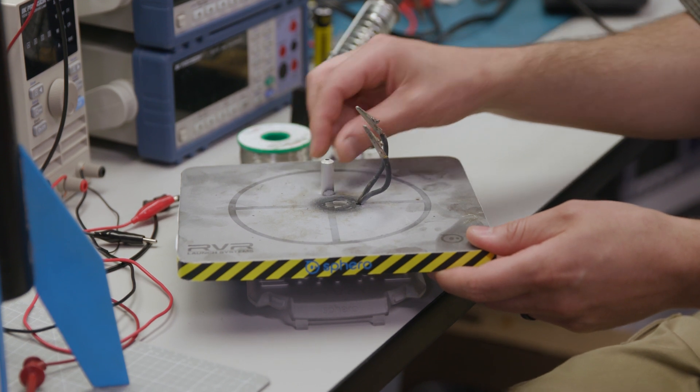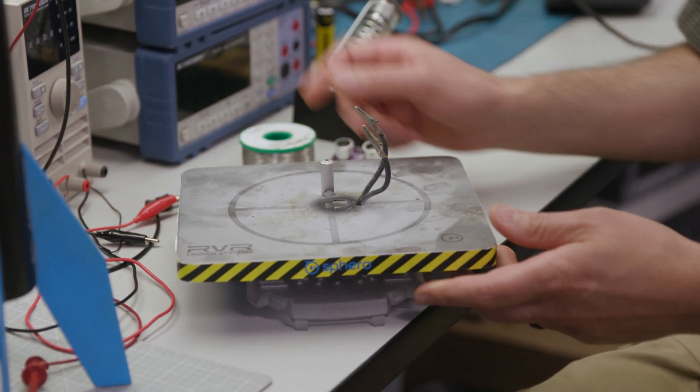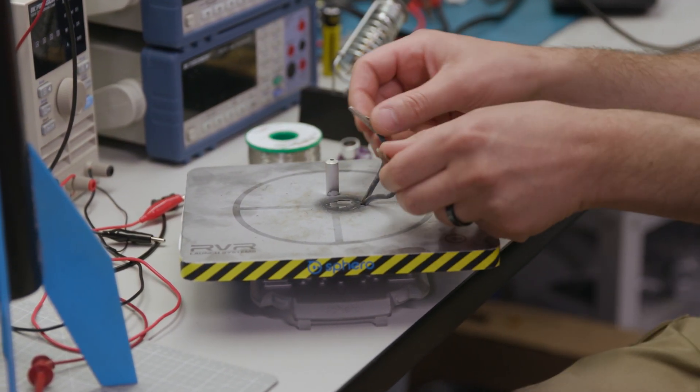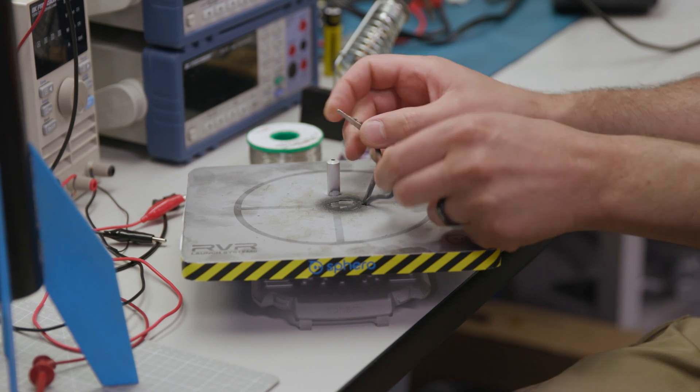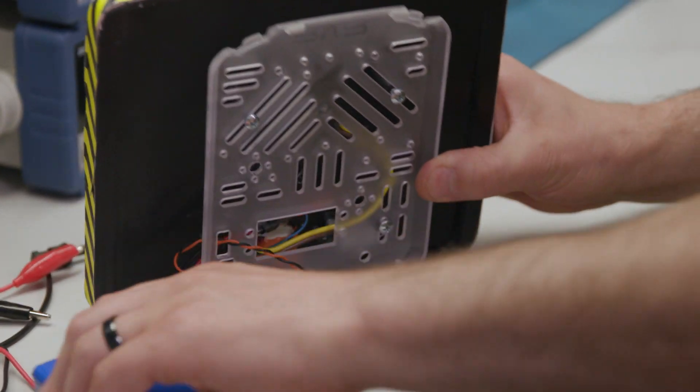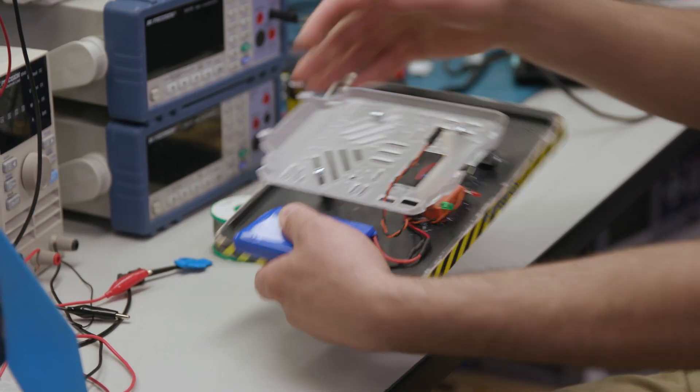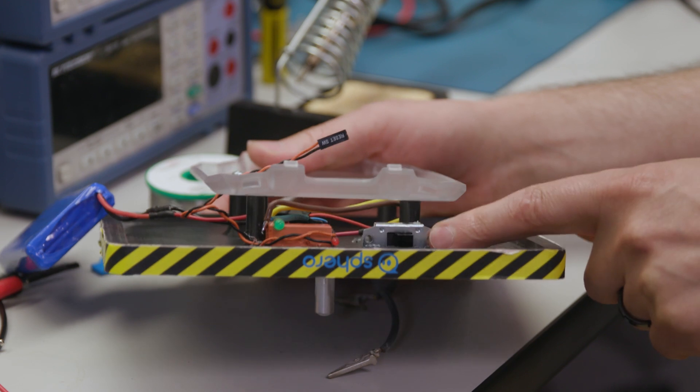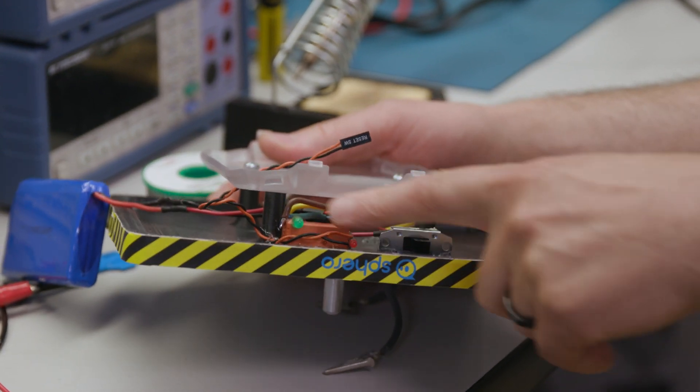These are our two igniter contacts that clip onto the model rocket motor igniter and launch it off. Underneath here, we have a battery for the igniter itself, a safety switch, and a simple relay with a couple of LEDs: an armed LED and a fire LED.